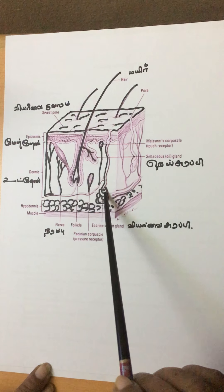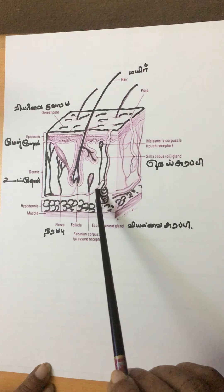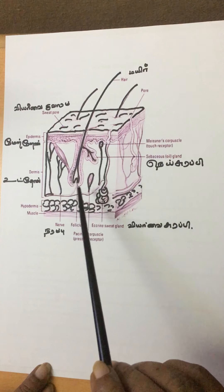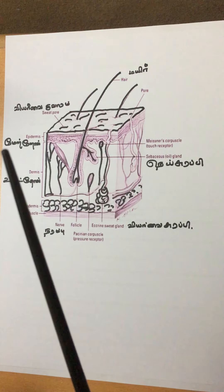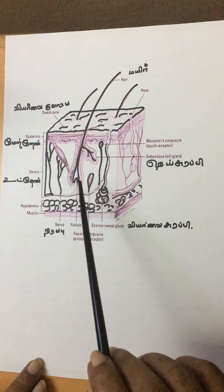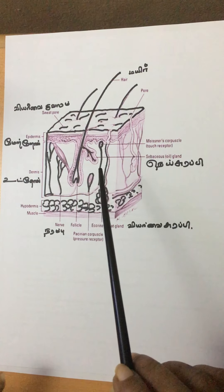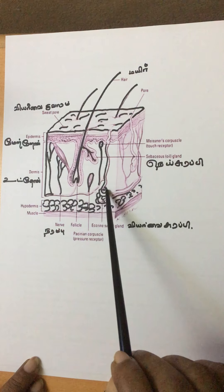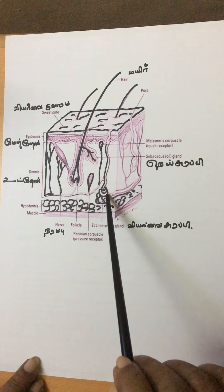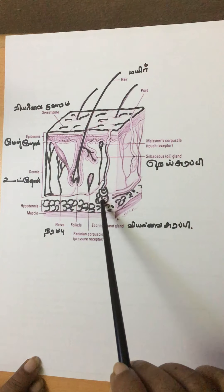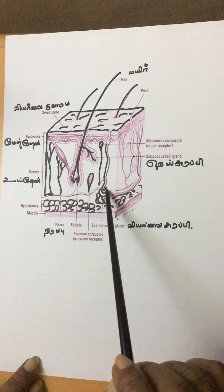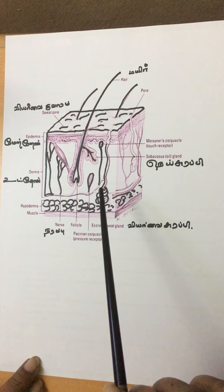There are sweat glands and many blood capillaries underneath the skin. When the environmental temperature increases or decreases, the blood supply to the skin changes to regulate body temperature. When the environmental temperature increases, the sweat glands produce more sweat, and the excess heat is lost with the sweat, helping to regulate body temperature.